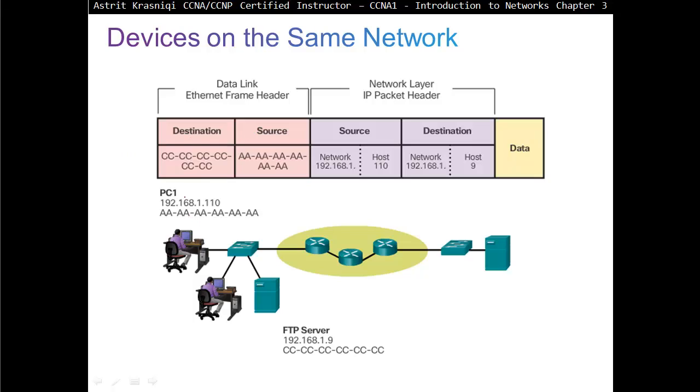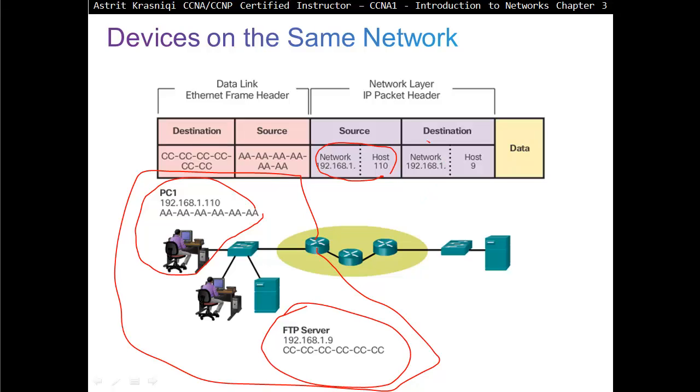For example, devices in the same network. So this PC wants to talk to 192.168.110. This PC, this is the source, which is this PC here. And it would like to talk to 192.168.1.9. They are talking in the same network. So this is the network. If it's on the same network, 192.168.1.9, which is this one here. That's that one there. That PC.